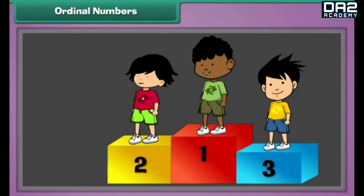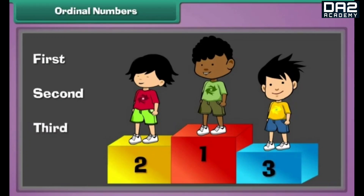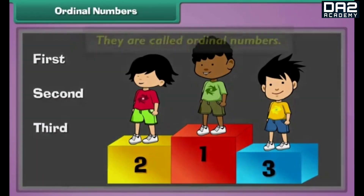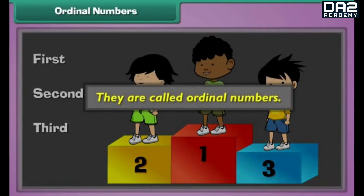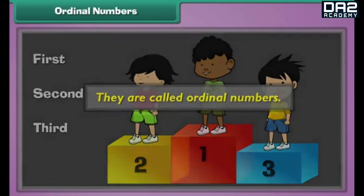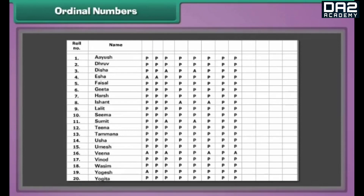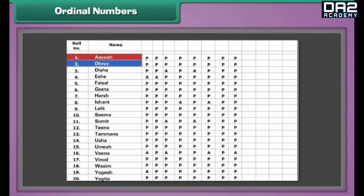Ordinal numbers. Words like first, second, third, and so on, are used to indicate positions. Such numbers are called ordinal numbers. For example, there are twenty students in a class. Ayush's name is written first in the attendance register. Dhruv's name comes second. Seema's name is at the tenth position.